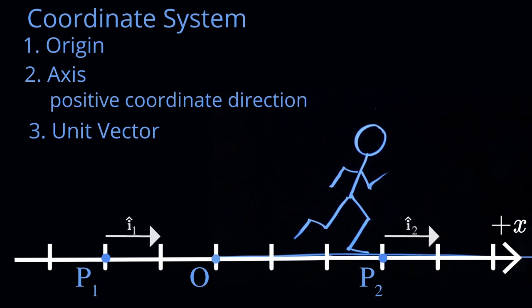So every single point in space has a unit vector. Now, what's unique about this one dimensional linear Cartesian coordinate system is the following. These unit vectors have the same magnitude. A unit vector, by definition, has magnitude 1. And they're pointing in the same direction. So if two vectors have the same magnitude and point in the same direction, they're equal.